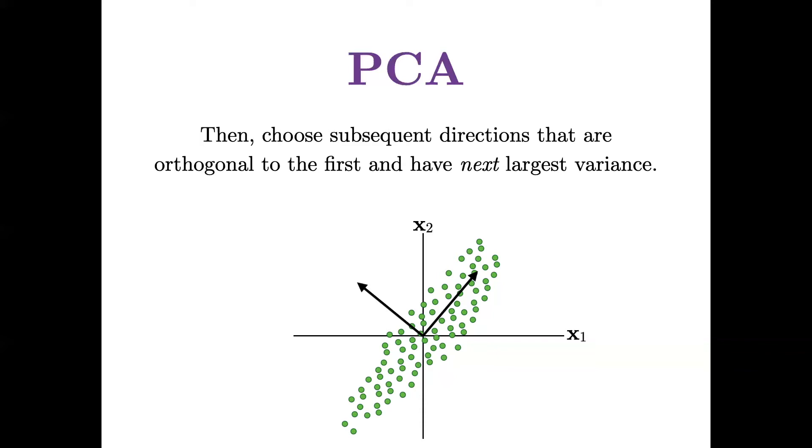Keep in mind, this arrow here points to the northeast, it could easily have pointed to the southwest, and it would be claiming an equivalent direction. And the same with this second arrow could have pointed to the southeast, and you could make an equivalent argument that those are the directions of maximal variance and the secondary direction.